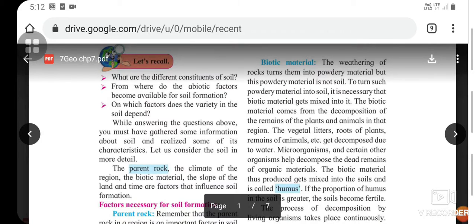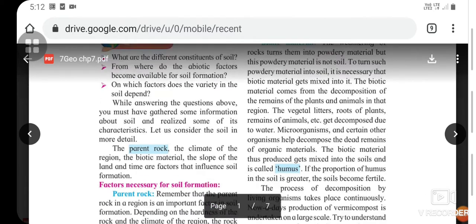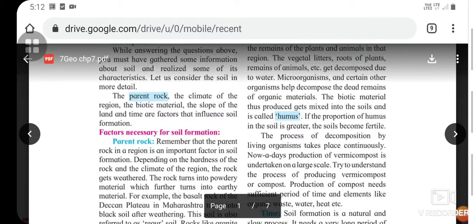Another factor is biotic material. The weathering of rock turns them into powdery material, but this powdery material is not soil. To turn such powdery material into soil, it is necessary that biotic material gets mixed into it. The biotic material comes from the decomposition of the remains of plants and animals.